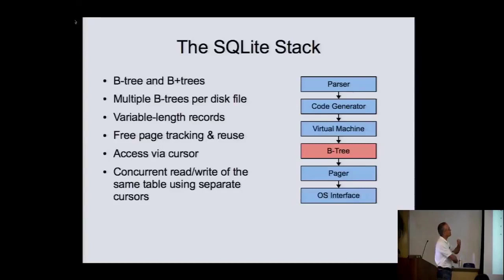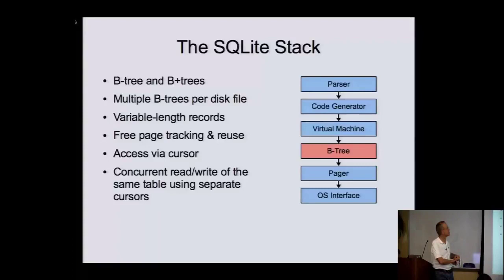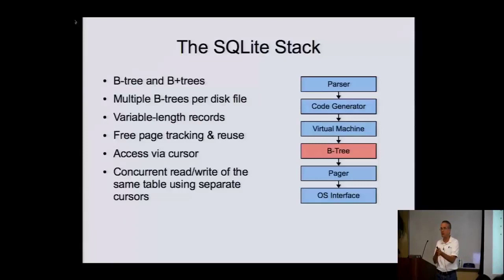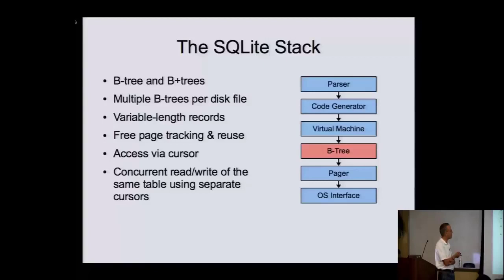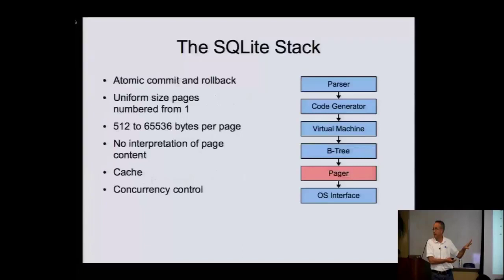The B-tree layer supports B-trees and B-plus trees. There are multiple B-trees per disk file — one B-tree for each table and one for each index. It uses variable-length records with a very efficient coding mechanism, and it's accessed via cursor. When working with B-trees, you open a cursor, seek it forward and backward, and it allows multiple cursors open on the same B-tree at the same time — including cursors that are changing the B-tree — and it automatically handles that people don't write things out from underneath each other. This is just the 30,000-foot view; I'll go back over all of this in more depth.